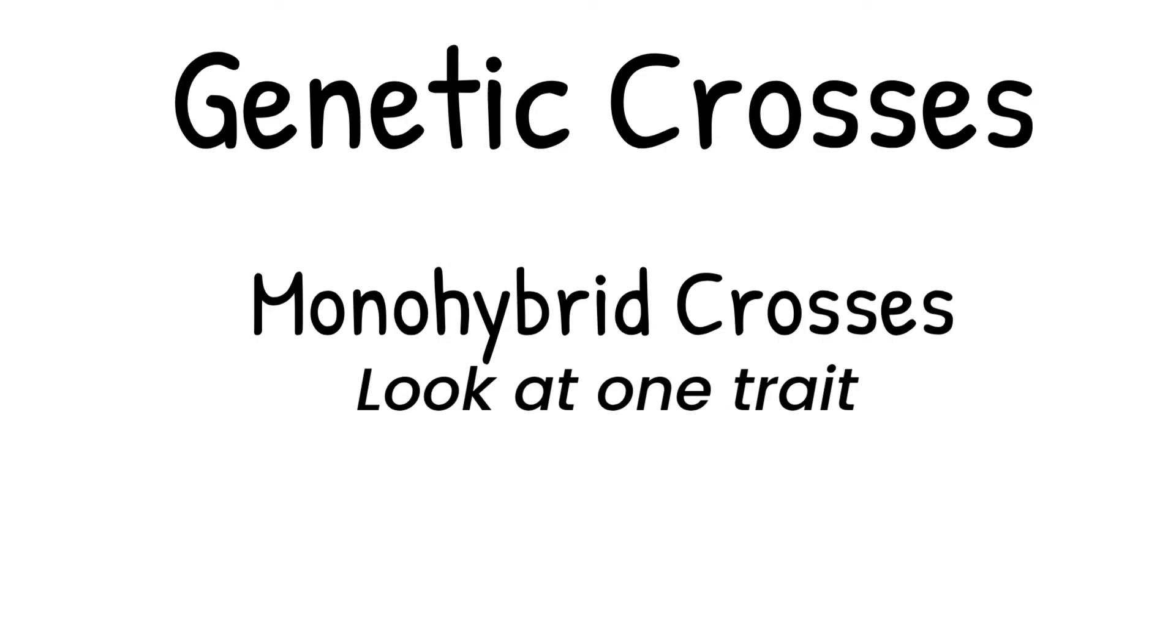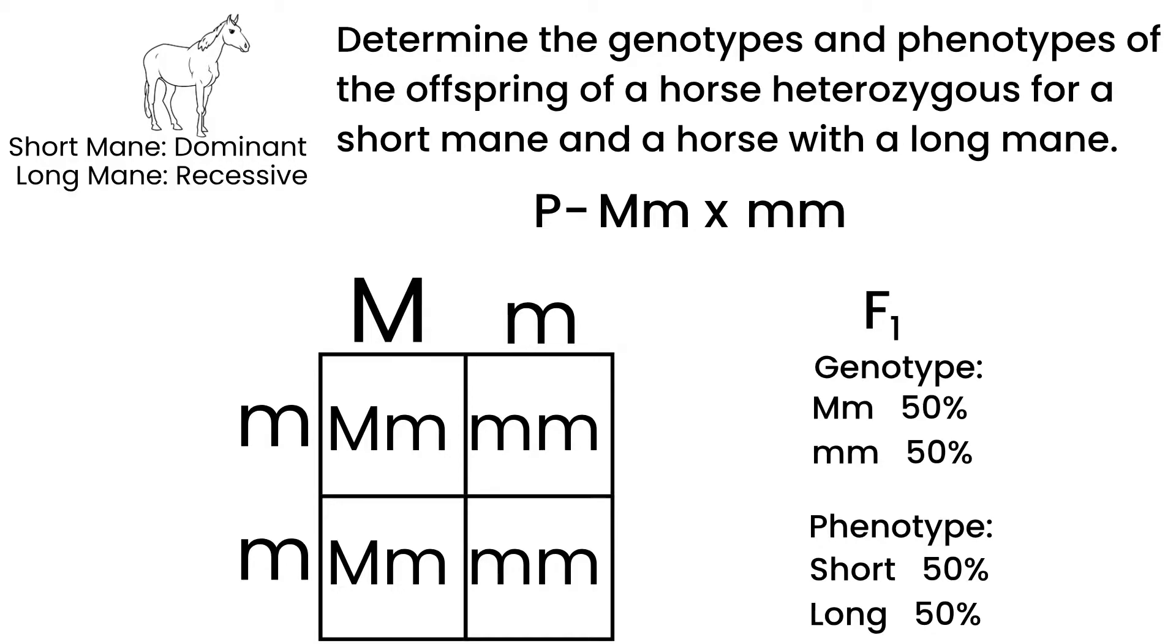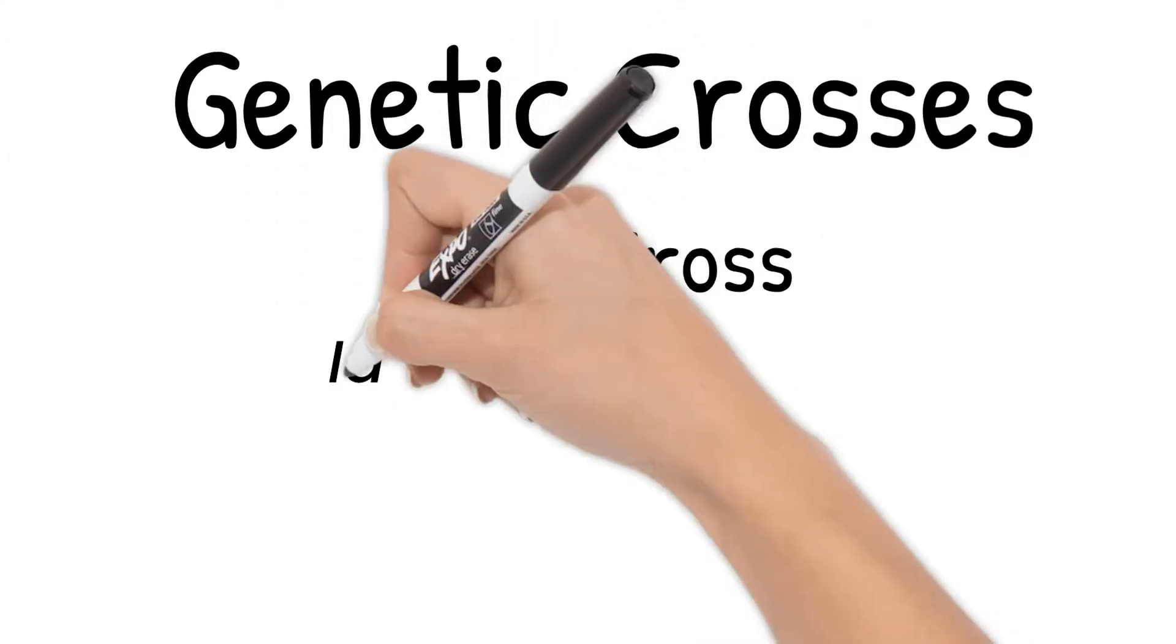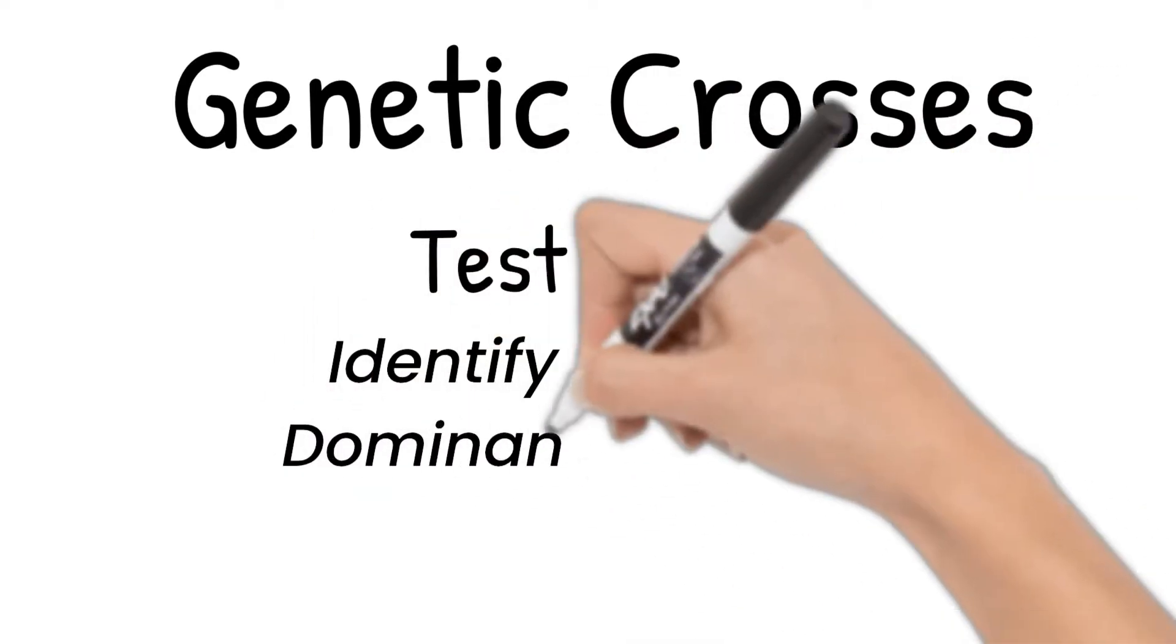In our last genetics video, we looked at monohybrid crosses and went through a few examples. But what if we don't know the genotype we're crossing? We can do a test cross to help determine an unknown dominant genotype.